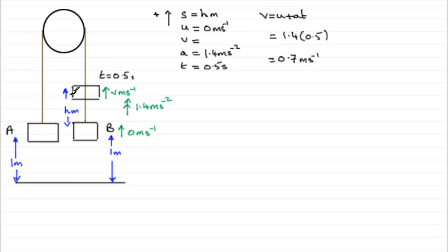How high does it rise though? Well, we can get that by using S equals UT plus a half AT squared. So S is going to be H. U we know is 0, so that takes out the whole of that term. So we're left with a half AT squared. So it would be a half multiplied by the acceleration, 1.4 multiplied by T squared, 0.5 squared. And if you work that out, it comes to exactly 0.175. So that would be 0.175 meters that B rises.